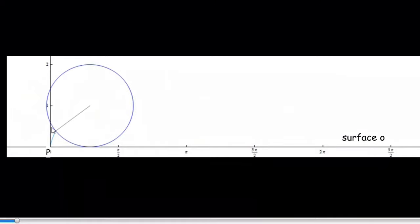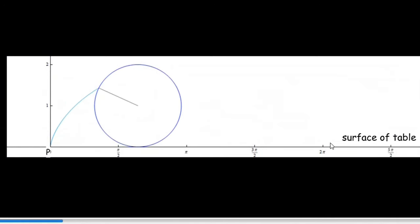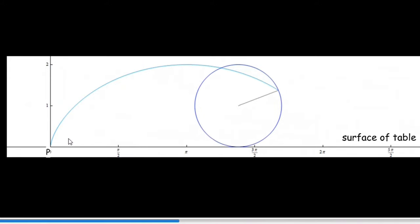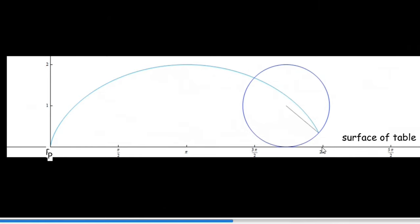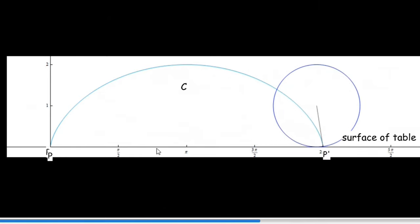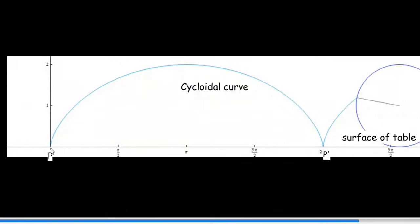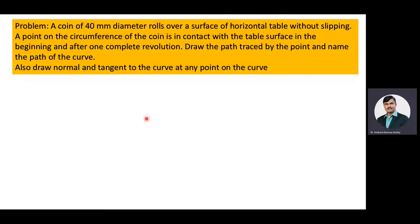The coin rolls on the top surface of the table for one complete revolution. The distance traveled by the coin on the surface is equal to 2πr, that is P to P' equals 2πr. The path traced by the point from P to P' is a cycloidal curve. From the animated video, we observed that the path traced is a cycloidal curve.